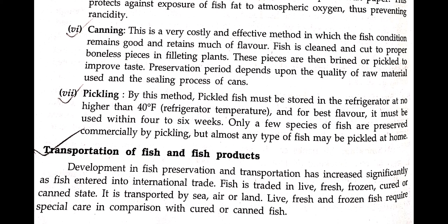For canning, fish is cleaned and cut to proper sizes and filleting. The fish species are brined and pickled to improve taste. For pickling, pickled fish must be stored in the refrigerator at no higher than 40 degrees Fahrenheit, and for best flavor it must be used within four to six weeks. Only a few species of fish are preserved commercially by pickling, but almost any type of fish may be pickled at home.